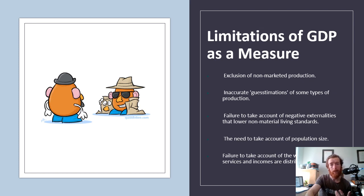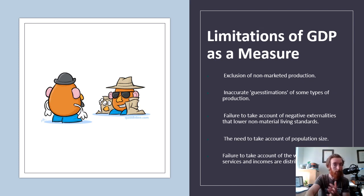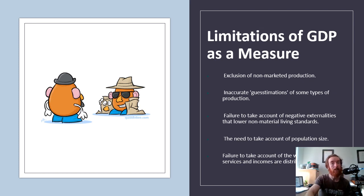With all different indicators we look at in economics, we consider their limitations because none of them are perfect. There are a decent number of limitations for GDP, and in a SAC situation this year and next year you're going to be asked about some limitations of GDP as a measurement of economic growth. There are five different examples here, but you're never going to be asked more than two in a SAC, so know a couple really well.